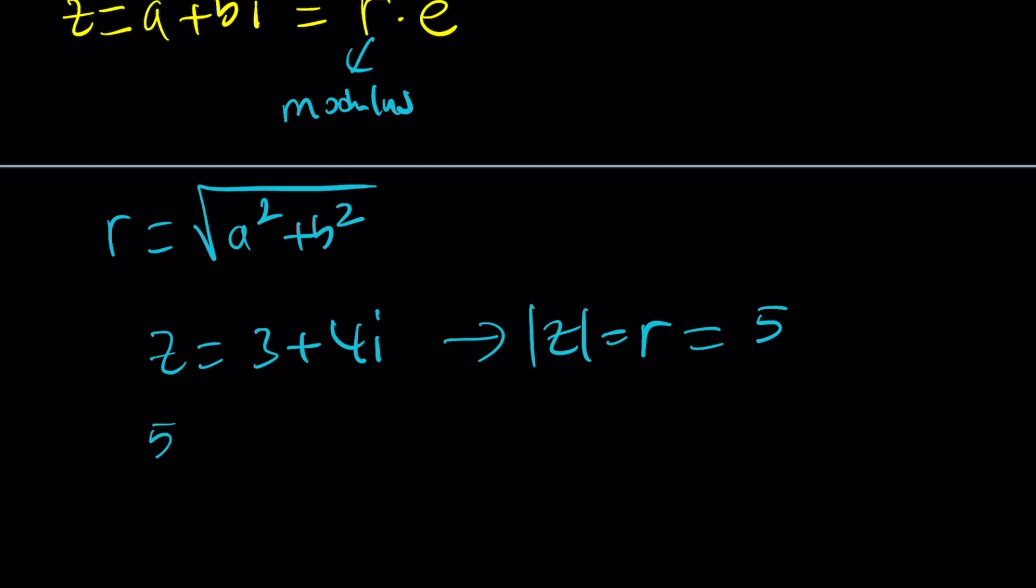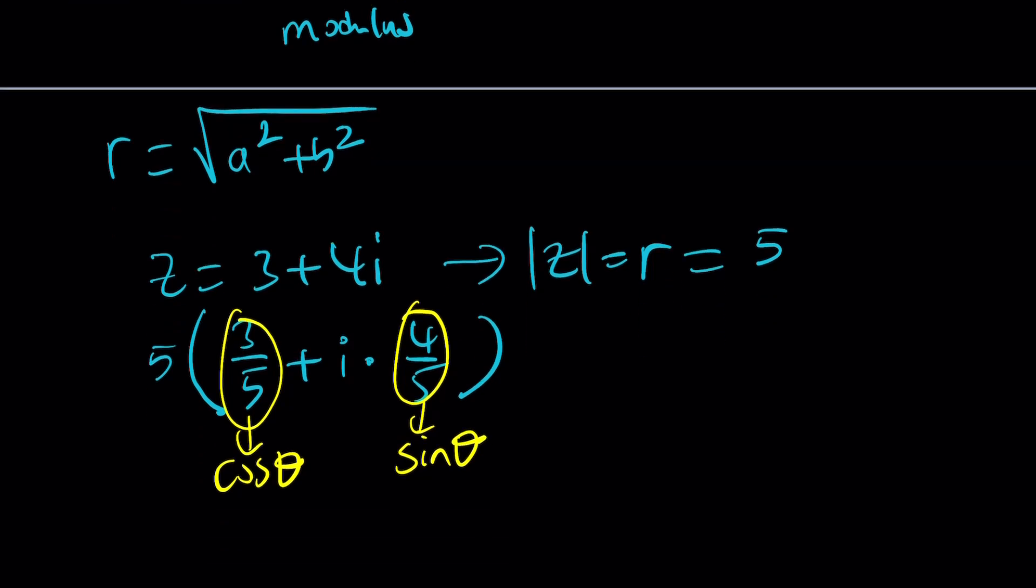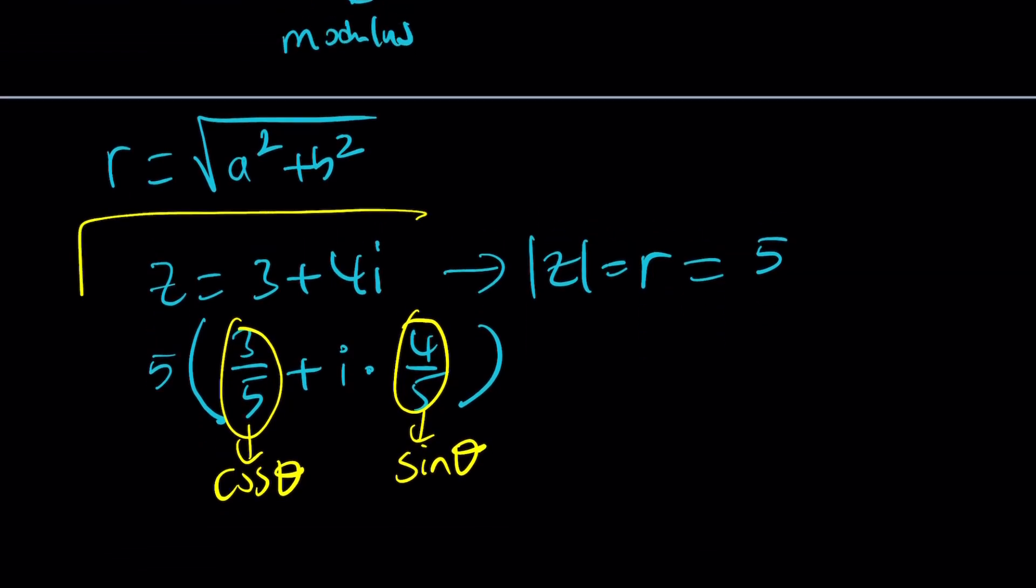And then we can kind of take out a 5 and write this as 3 over 5 plus 4 over 5i, or I could probably write it as i times 4 over 5, which is more appropriate. And now from here we should be looking for an angle whose cosine equals this, at the same time whose sine equals this. Obviously we do know that we're in the first quadrant because this represents 3 comma 4 as a point. You can also think of it as a vector, and then the angle is going to be acute, right?